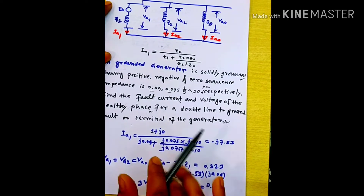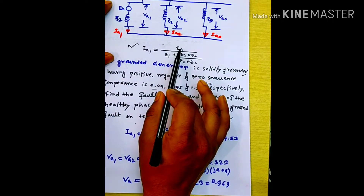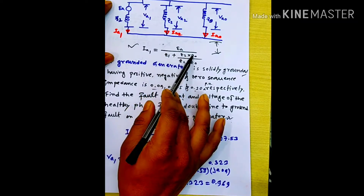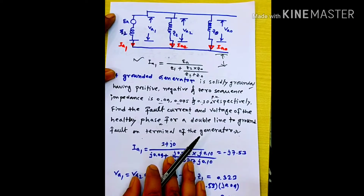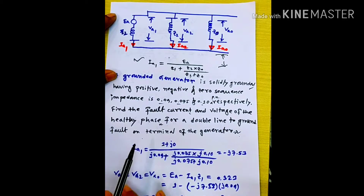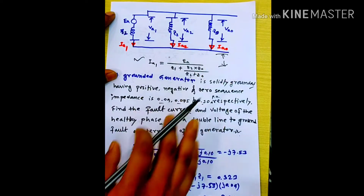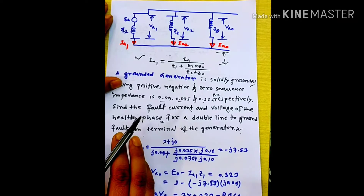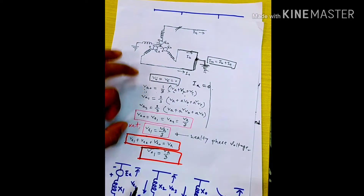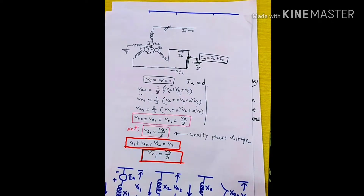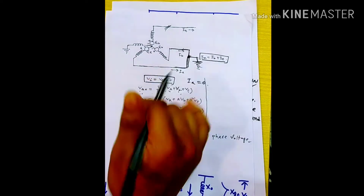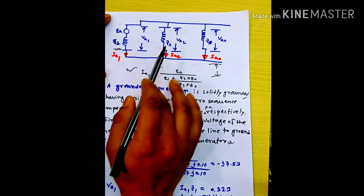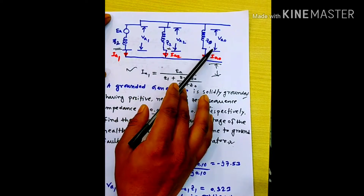IA1 gives the single line-to-ground voltage. The line-to-neutral voltage is the same. The fault is the double line-to-ground voltage. The equivalent circuit has positive sequence impedance, and the negative sequence and zero sequence impedances — the negative sequence impedance is in parallel.